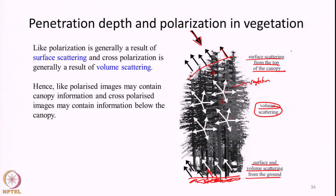Essentially, not only the vegetation properties but also the surface properties — whether the surface is dry or wet — will have a combined effect on the backscattering coefficient recorded in the radar image.